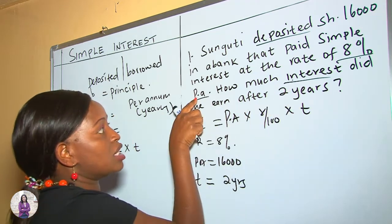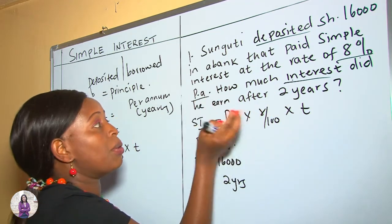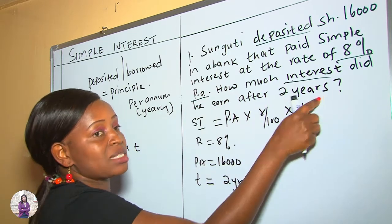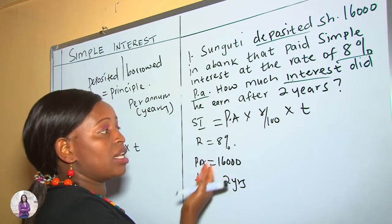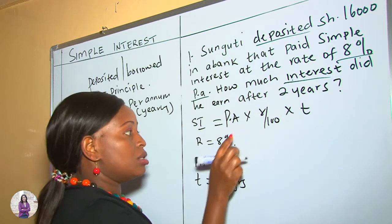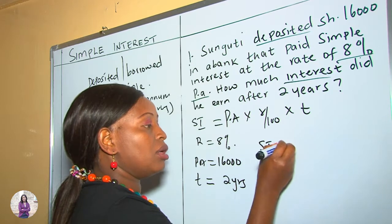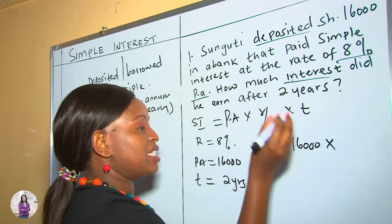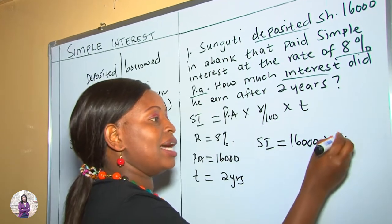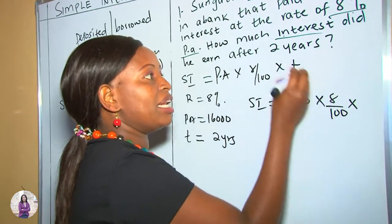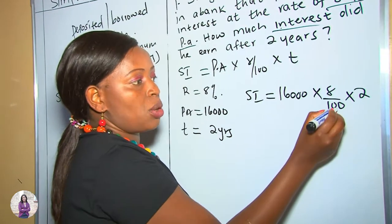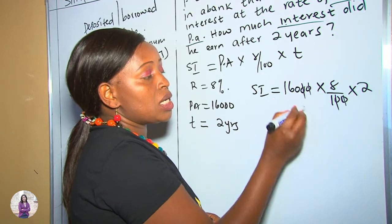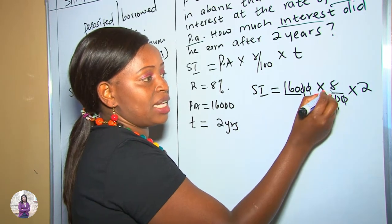We need to be careful with 'per annum' — sometimes they can tell you per month. Because of per annum, we are working with years and not months. So let's put what we are given into our formula. SI equals the principal of 16,000 multiplied by rate of 8 over 100, times time of 2 years. We cross-multiply: the two zeros cancel, leaving us with 160 times 8 times 2. Eight times 2 is 16, therefore 160 times 16.